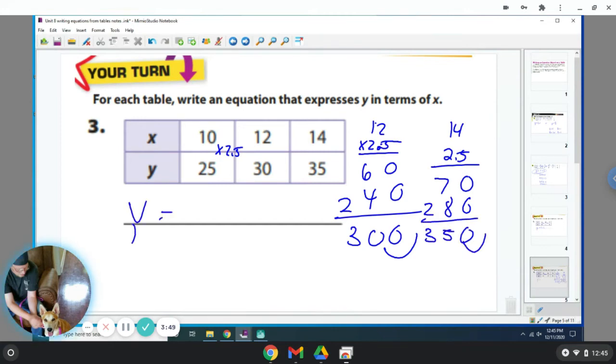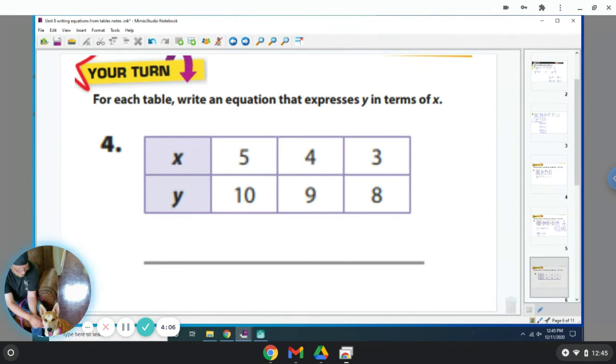So my equation would be y is equal to 2.5 times x. And one of the reasons why I knew how to get 2.5 is I took 25 and I divided by 10, which is 2.5. And just see if that works with all of my other x's and y's.